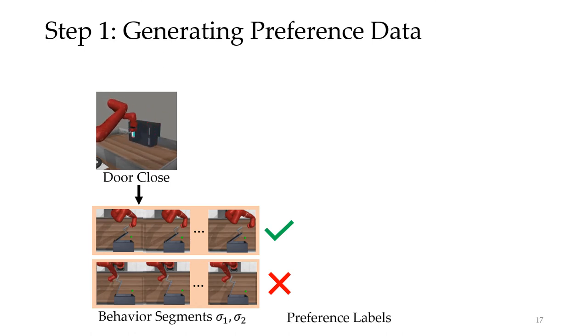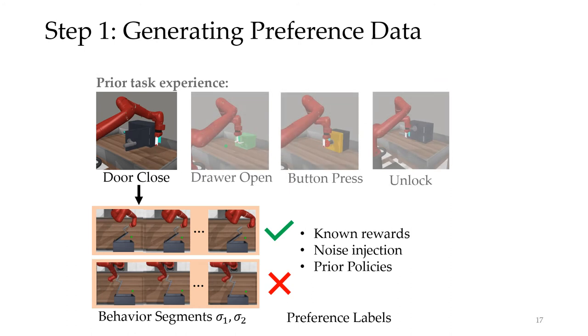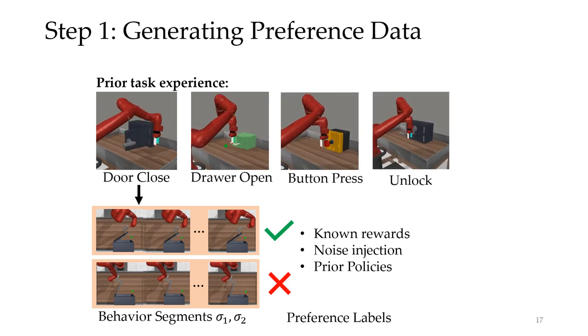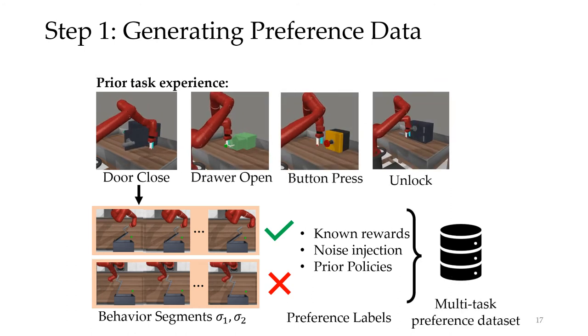These labels, or the preference labels, can come from different sources. They can come from previously known reward functions, by injecting noise into known policies, or by comparing policies across different tasks. We can repeat this behavior segment extraction and labeling process for a bunch of different tasks. And we finally assemble all of these data points into a multi-task preference dataset.